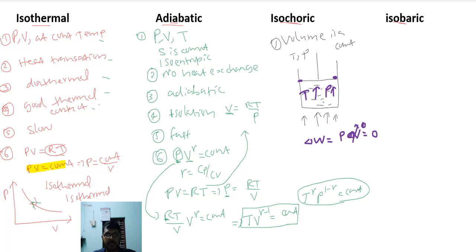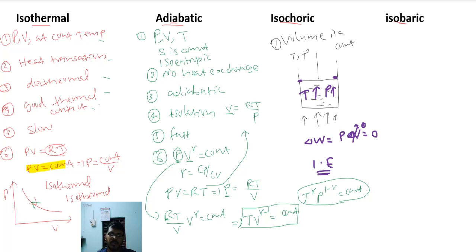In an isochoric process, work done is zero. So if heat is applied, that heat will be completely used to change the internal energy — it will not be used for doing work. The whole heat goes into changing internal energy. This is an example of an isochoric process.